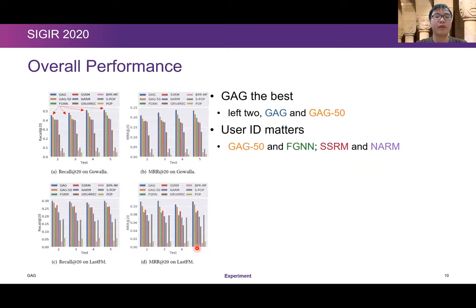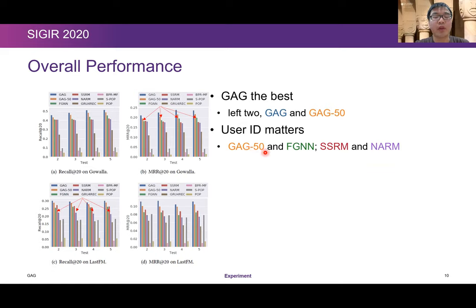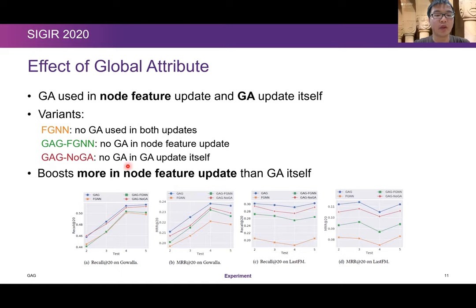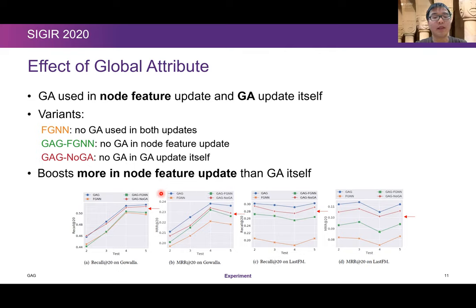For overall performance, the left two bars are our proposed GAG model and GAG50 model, where 50 indicates the embedding size. Our proposed model achieves the best results in all situations. We can also see that user ID information is quite important — comparing GAG50 and FGNN, we use user information as the global attribute. SSRM also uses user information, leading to stronger results. We also evaluate the global attribute, which is used in both node feature updates and the updates of itself. The results show that the global attribute in node feature updates contributes more strongly, but both are useful.